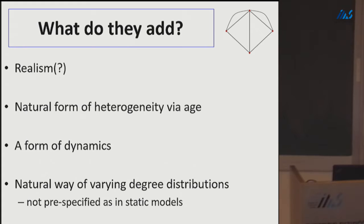Why work with these models? We don't just want to complicate models because they match reality—we want parsimony. We only add complexity if it brings something conceptually to the table. But these models give us a natural form of heterogeneity, explicit dynamics, and most importantly, different degree distributions. This class of models will allow us to fit degree distributions to data.